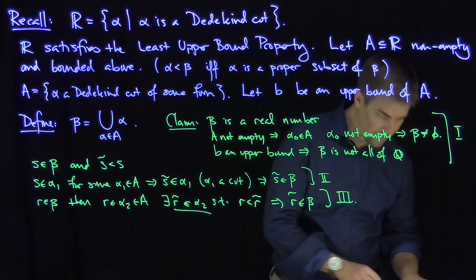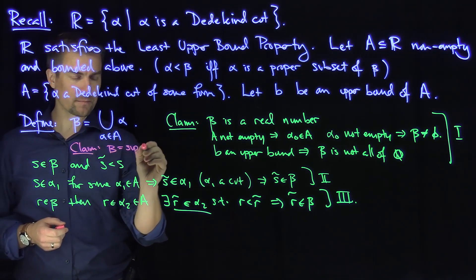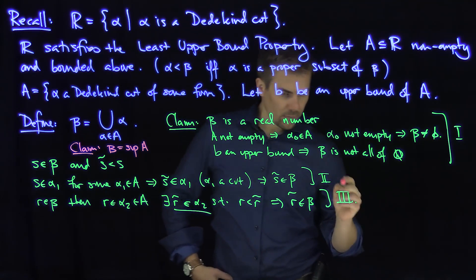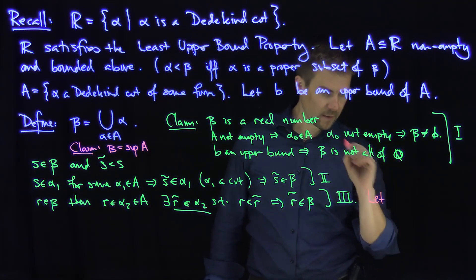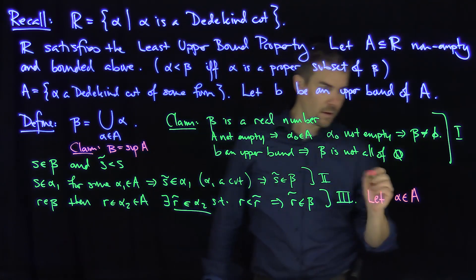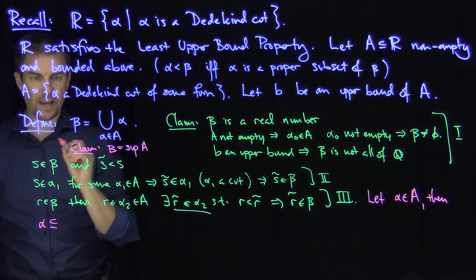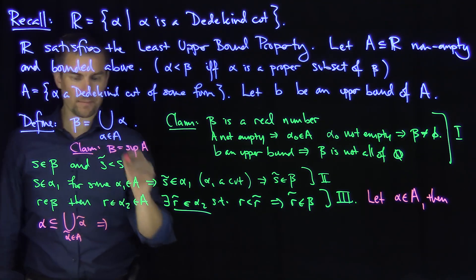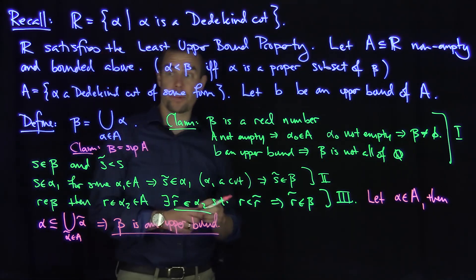Furthermore, we claim that this beta is actually the supremum of the set A. I need to prove two things. The first is that beta is an upper bound. Let alpha be in A. Then alpha is contained in the union over all alpha-tilde in A of alpha-tilde, because alpha is one of those things in A. And that says that beta is an upper bound — that's the first condition for supremum.